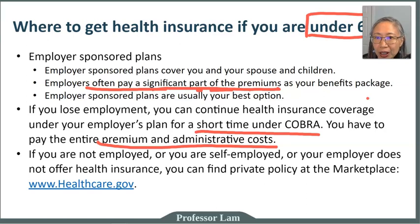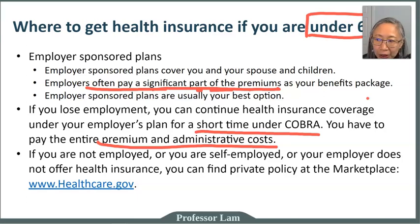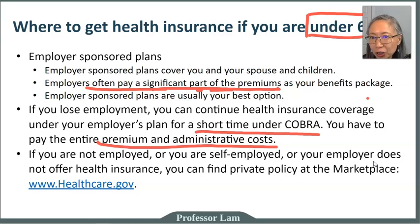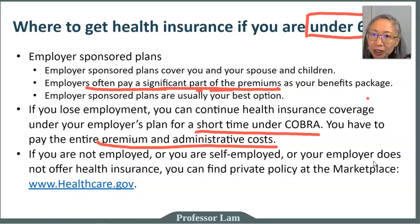There is an alternative source under the ACA: once you're unemployed, self-employed, or if your employer does not provide insurance, you can find private insurance on the government health marketplace at healthcare.gov. Remember that just because you are no longer employed doesn't mean you lose access to health insurance. The policies on healthcare.gov are private health insurance policies — it is a government marketplace that enables you to buy private health insurance. Now let's look at the different types of insurance policies.